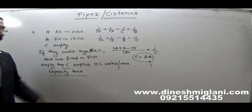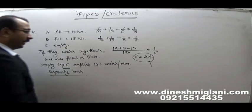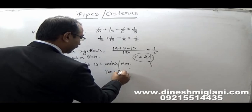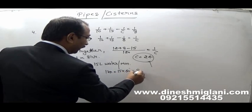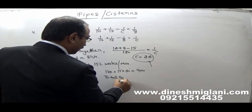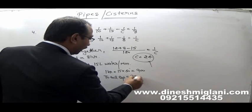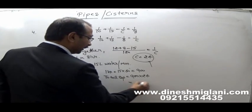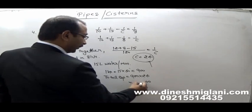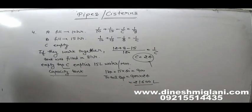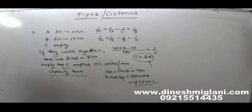C takes 24 hours to empty the tank. In 1 minute it empties 15 liters, so in 1 hour it empties 15 × 60 = 900 liters. Total capacity = 900 × 24 = 21,600 liters. That becomes your answer.